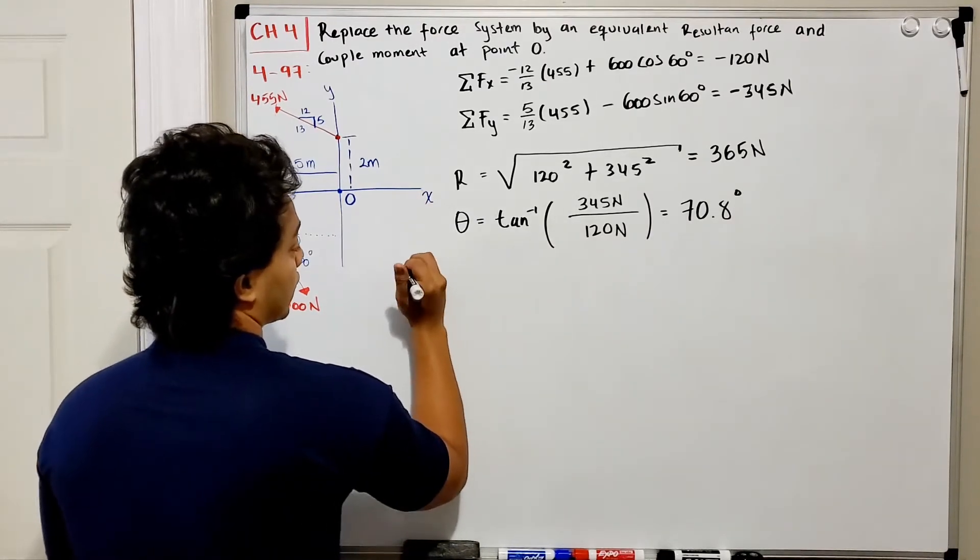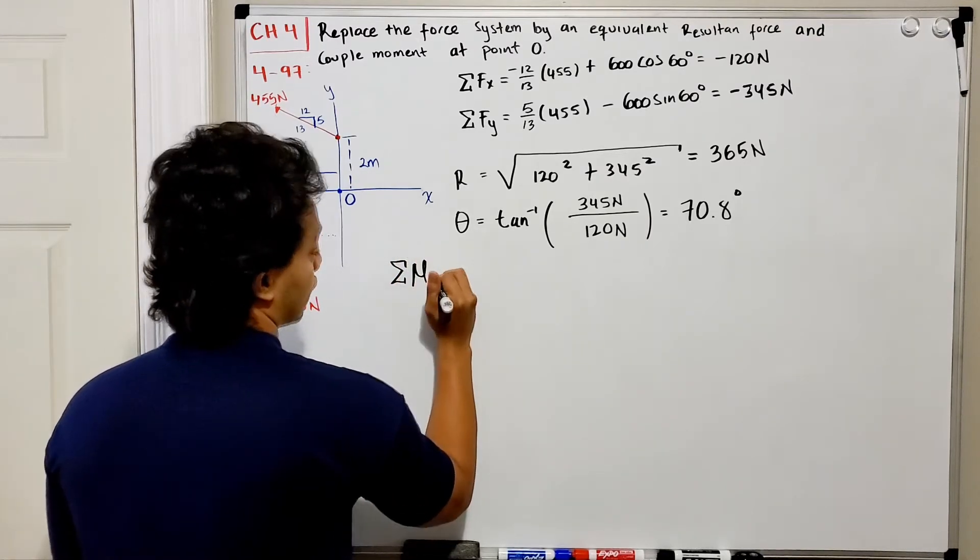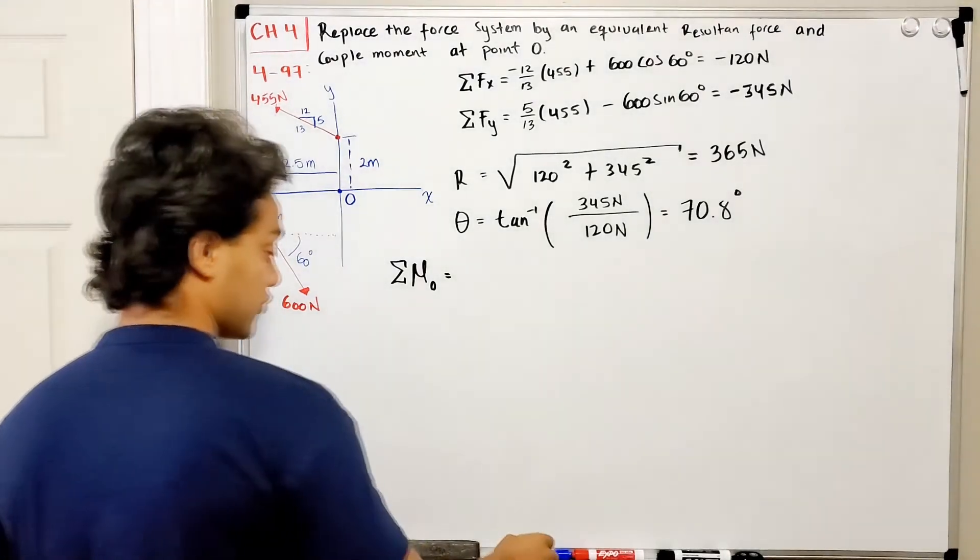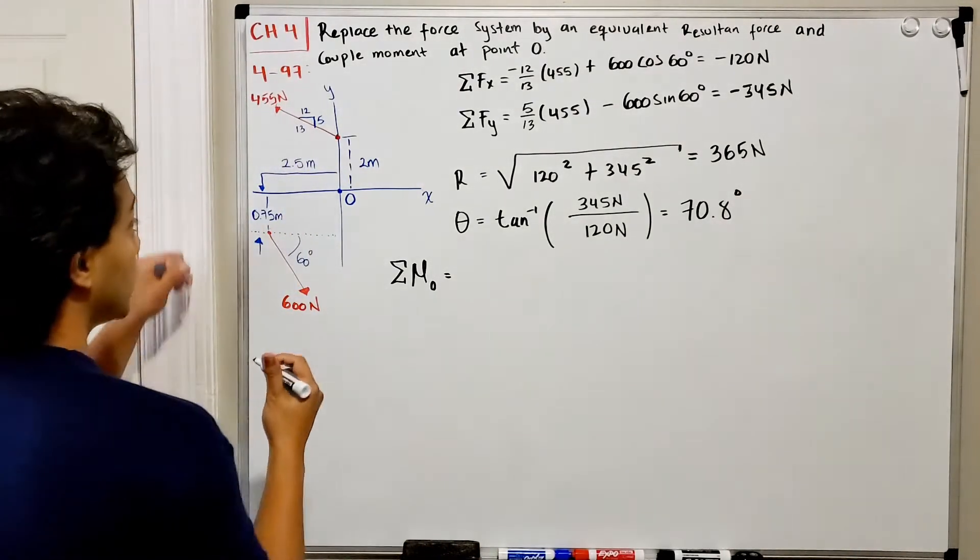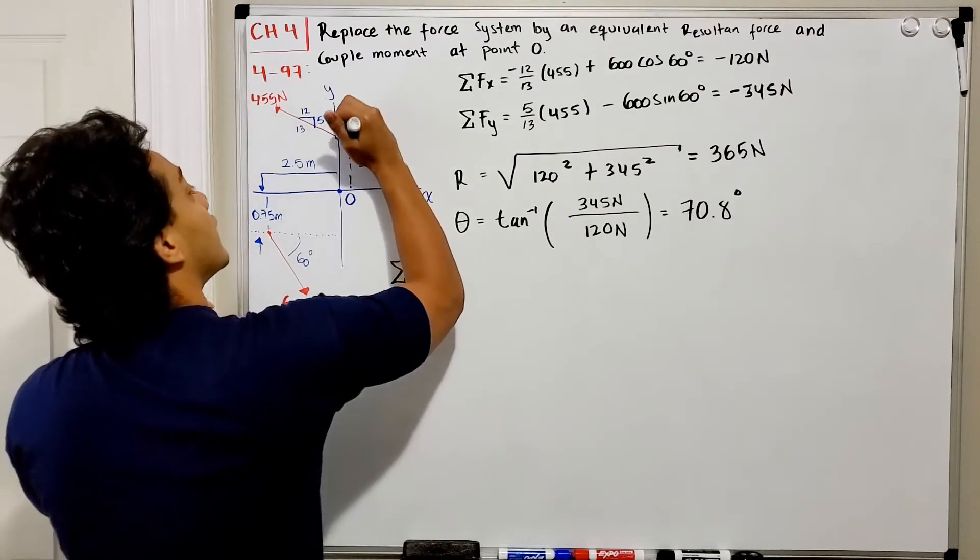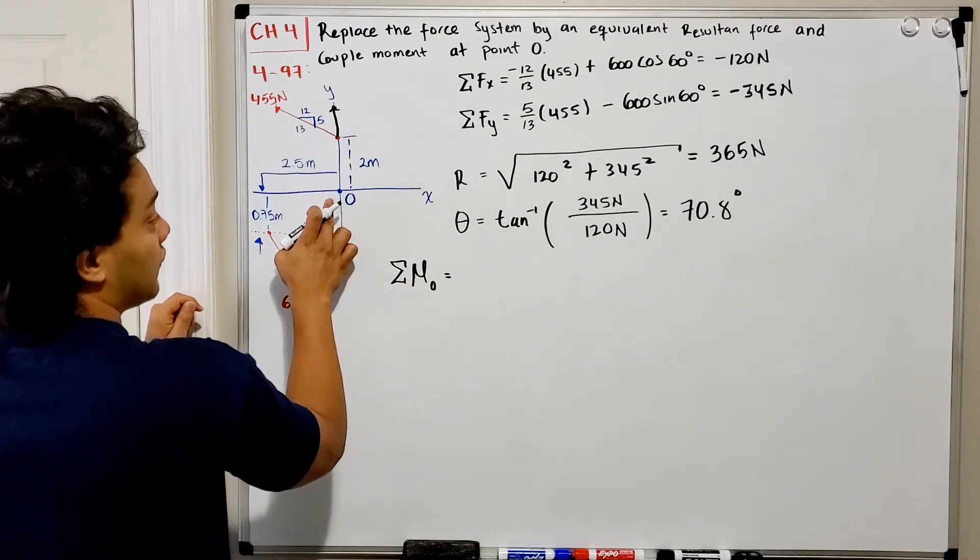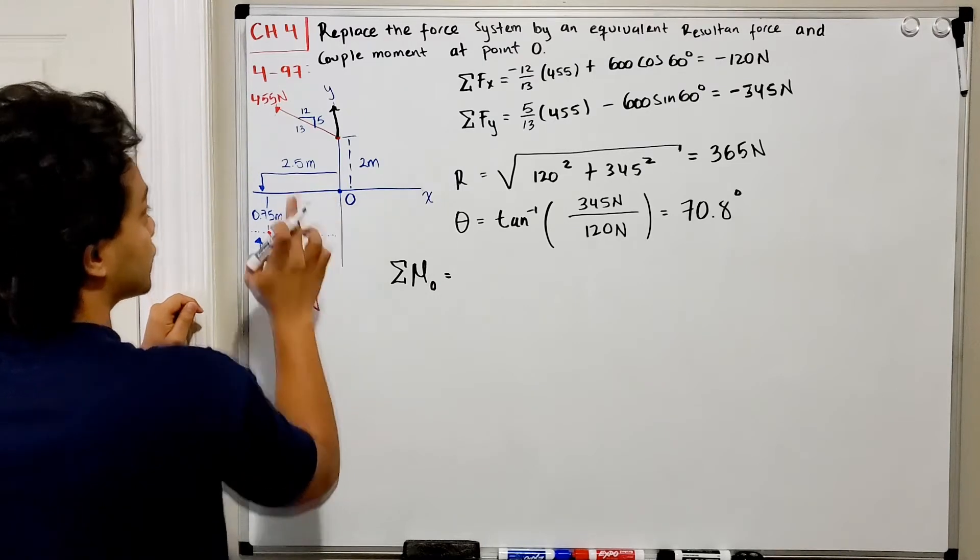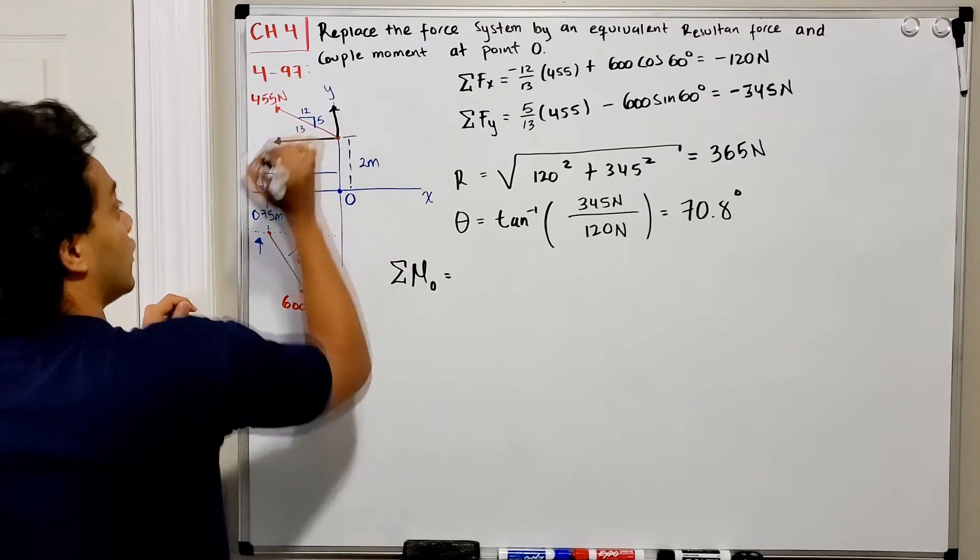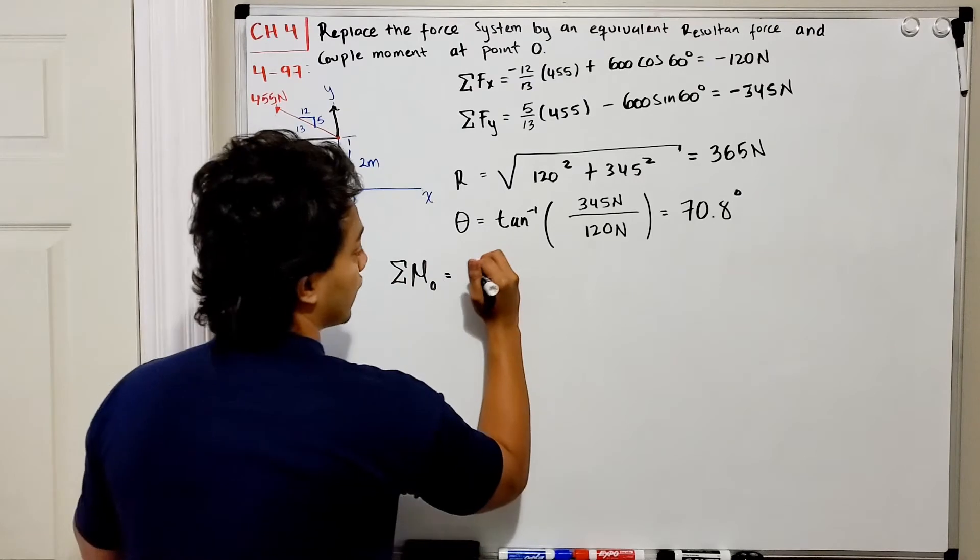Now we need to find the moment. We're finding the sum of moments around point O. We need to decompose these two forces into x and y directions. In the y direction, the force is going up, but the distance between the force and point O is zero, so we don't count that. We have to take into account the force going to the left.